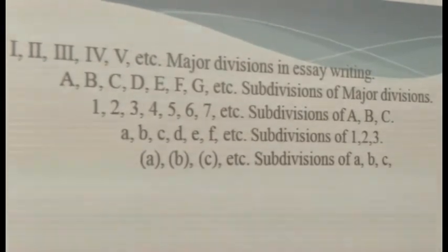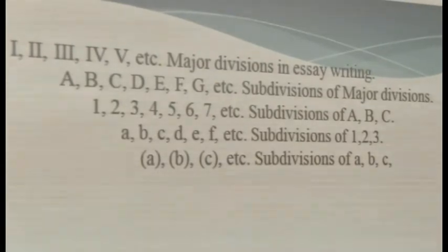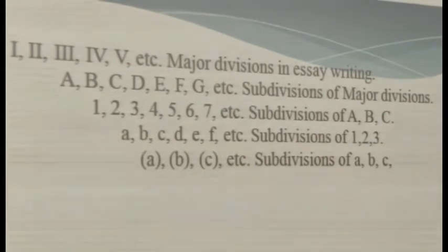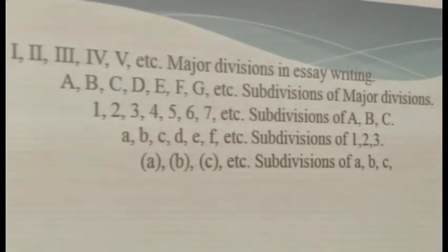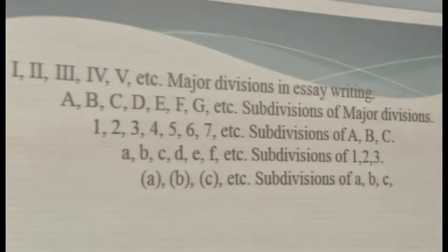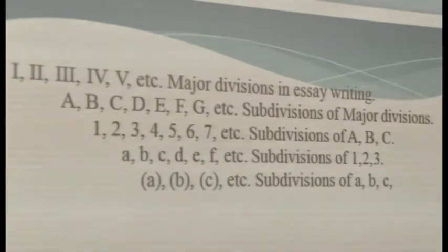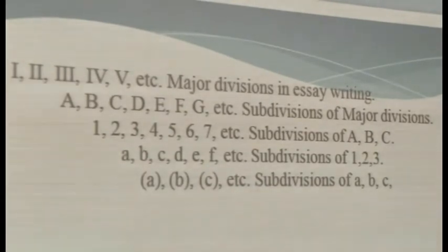And these subdivisions, if they also have their own subdivisions, we use numbers to identify them. In case these subdivisions have their own subdivisions also, we use small letters. In case these subdivisions have yet further subdivisions, we use small letters encased by brackets to identify them. In other words, the slanting indentation on each of the lines shows that the one underneath is a subdivision of the one above.